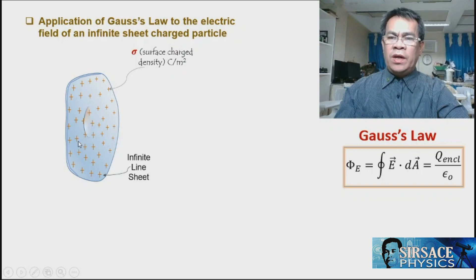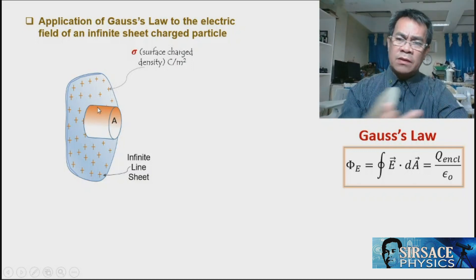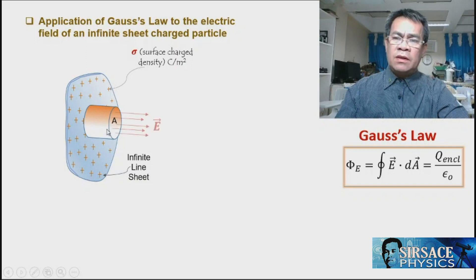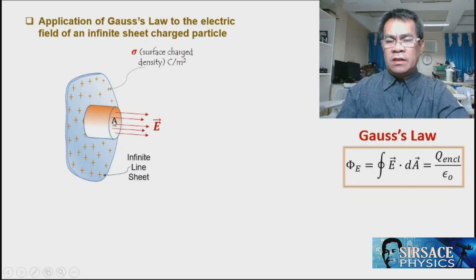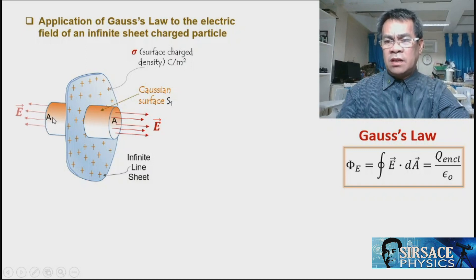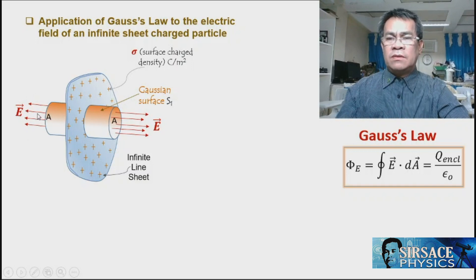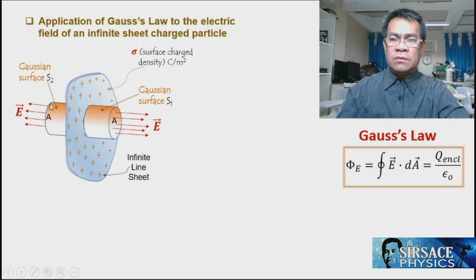We enclose a portion of the infinite sheet charge with a Gaussian surface at radius r on one side. There is an electric field and therefore flux on this Gaussian surface one. By symmetry, there is also a symmetric surface area A on the other side with the same electric field and flux — this is Gaussian surface two.